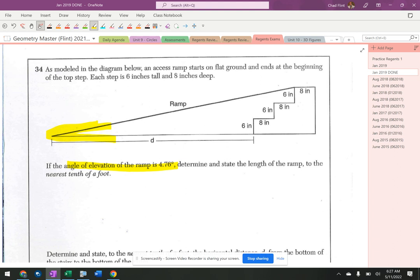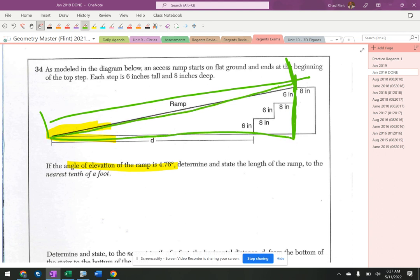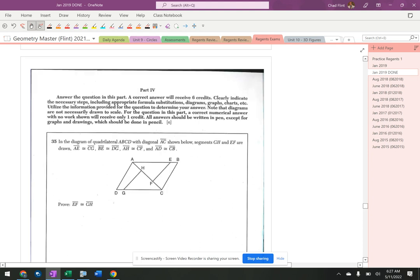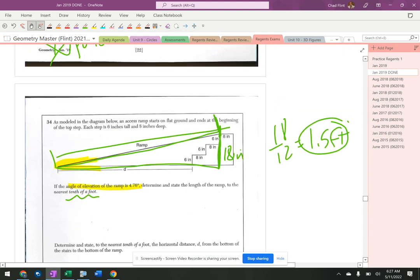Alright, determine and state the length of the ramp to the nearest tenth of the foot. So we want to know how far it is from there to right there. So here's our right triangle, and I can tell that it goes up 18 inches. Now it says tenth of a foot, so they're playing this unit game again. 18 inches is 1.5 feet. They're gonna play the unit game in almost all of these questions with inches and feet.